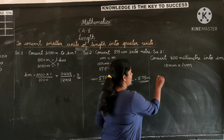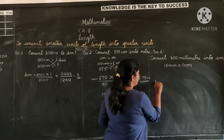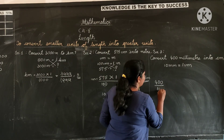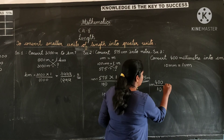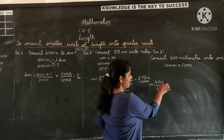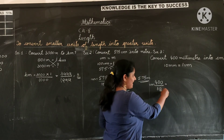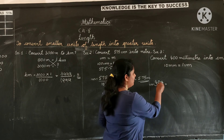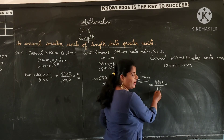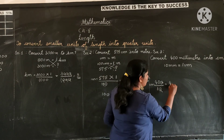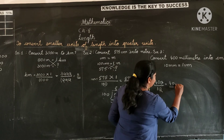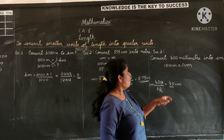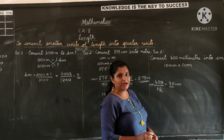Let us divide and see. If you divide 400 by 10, we can cancel the zero. So 40 divided by 1 gives 40. Therefore, 40 centimeters make 400 millimeters.